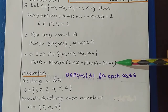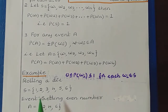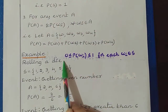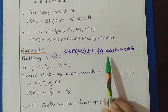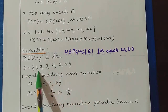Let us understand these rules in detail by considering some examples. The first rule says that the probability of the event is in between 0 to 1 — it cannot be negative and it cannot be greater than 1. Here I have taken an experiment of rolling a die. The die consists of six faces, so we can have six outcomes: 1, 2, 3, 4, 5, 6. This is the sample space of this experiment.